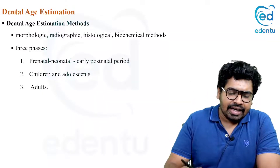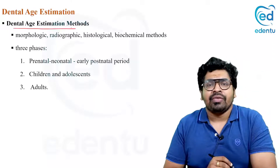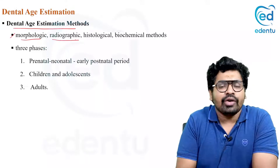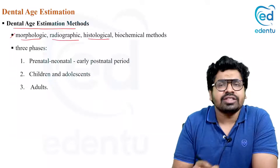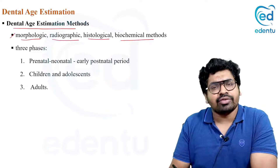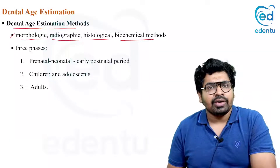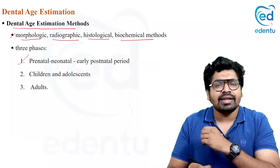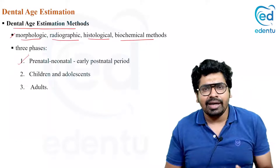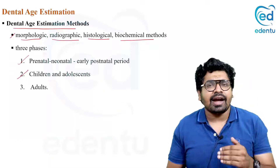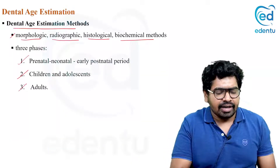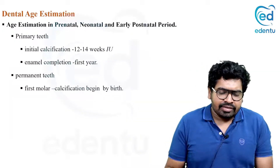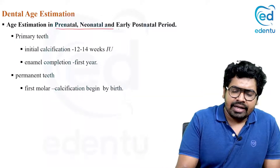Different dental age estimation methods include: tooth morphology, radiographs, histological methods, and sometimes biochemical methods. There are three developmental phases: the prenatal/neonatal/early postnatal period, the child and adolescent age group, and the adult. Different techniques are used for each age group.